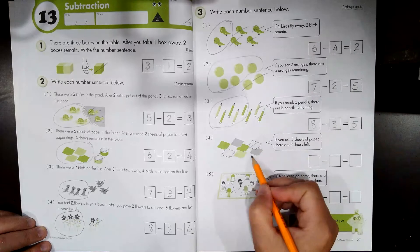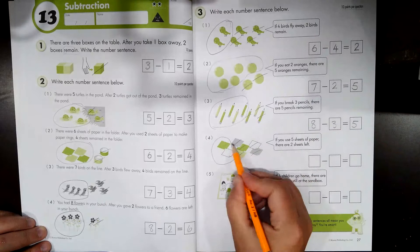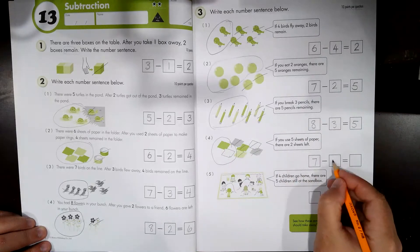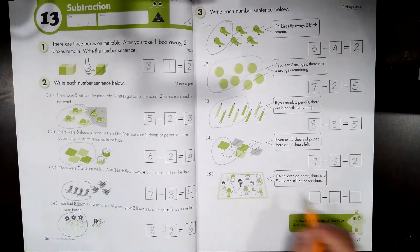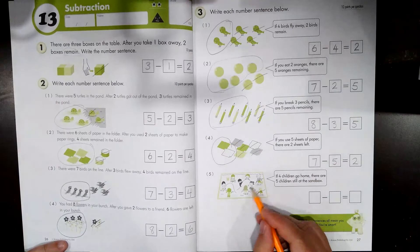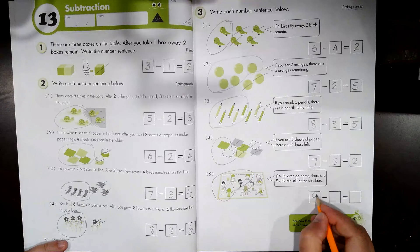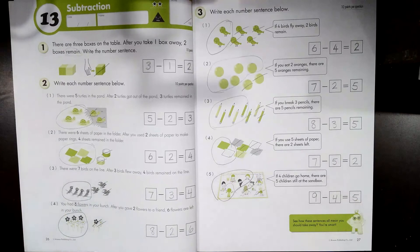If you use five sheets of paper, two sheets are left. So you have seven sheets of paper, you use five, and two are left. If four children go home, and five children remain, you started with nine children minus four children equals five children.